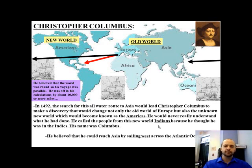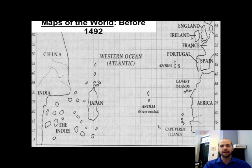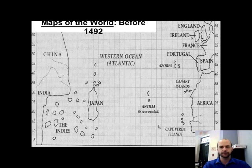Basically, his idea was that he could reach Asia by sailing west across the Atlantic Ocean. Looking at this map that you've seen before, you can see — hey, it's a no-brainer. Sail west from Spain and you will reach China and India eventually. But there's a large problem, and we'll talk about that.